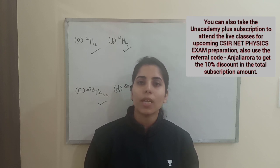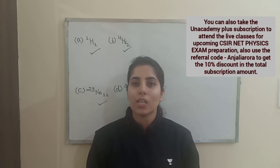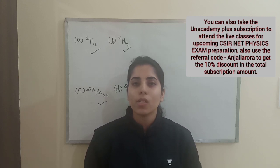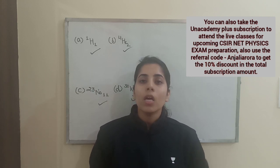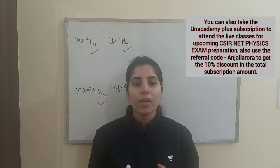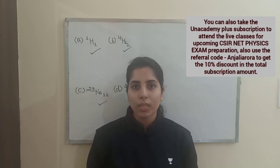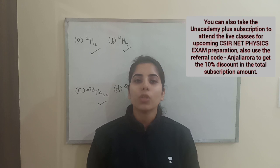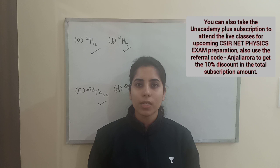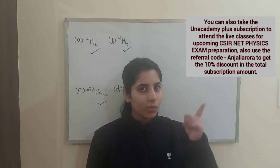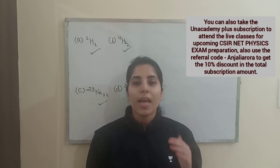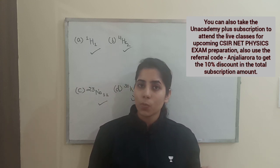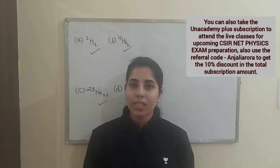You can take the subscription for one month, three months, six months, or one year — whatever is convenient for you. One more benefit: by using the referral code 'ANJALI AURORA' — capital A, all other letters in small, no space in between — you will get a 10% discount on the total subscription amount. To get started, download the Unacademy learning app, log in, select your goal such as CSIR UGC Net, click on the three lines at the left corner, then click on Plus, then Get Subscription, and apply the referral code there.